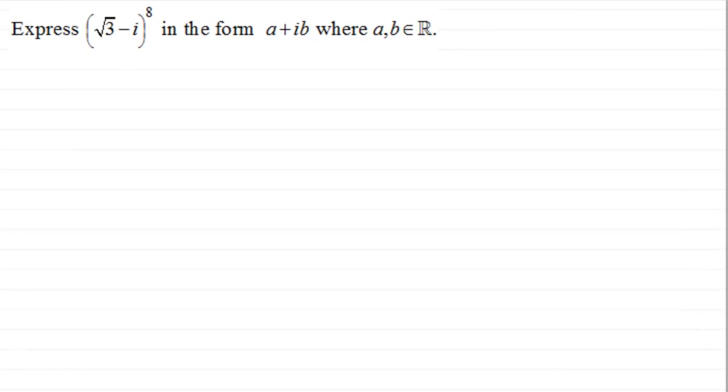Hi. Now I've got another example here that you might like to try. It's based on using De Moivre's theorem. What we've got to do is express root 3 minus i all to the power 8 in the form A plus IB, where A and B are real numbers. So if you'd like to give this a try, just pause the video, come back when ready, and you can check your work solution with mine.